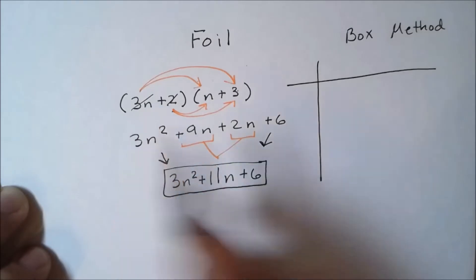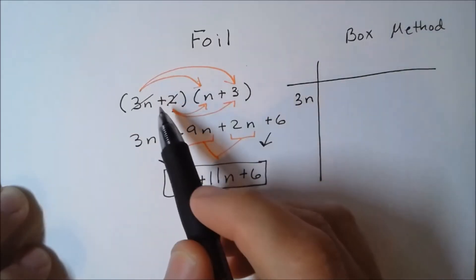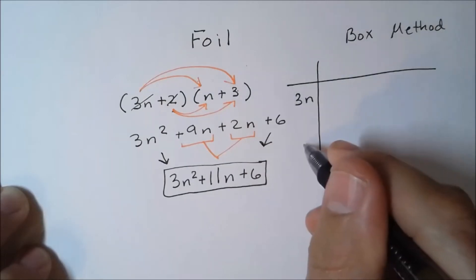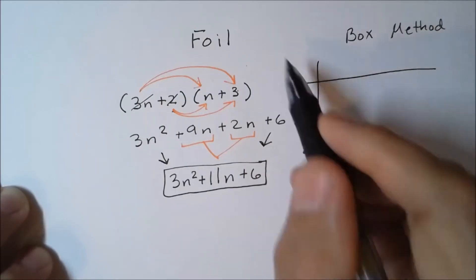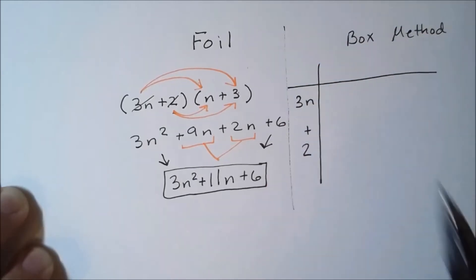With the box method, we're going to take our first term and write it in the top of the box, and then our second term we're going to write it in the bottom. Let me go ahead and draw a line breaking this up.